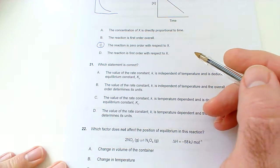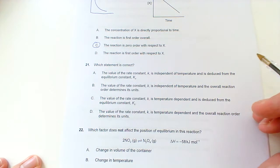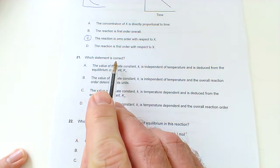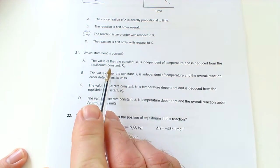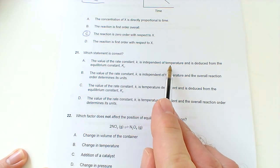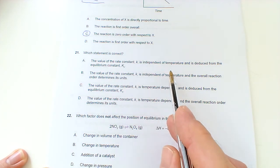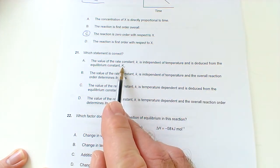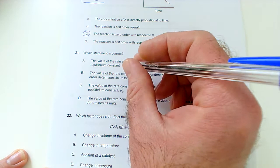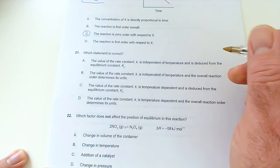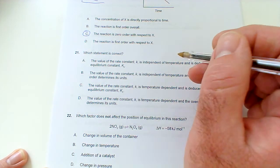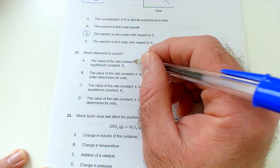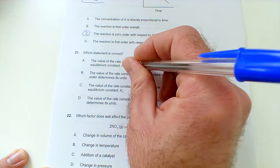Question 21, May 2018 Time Zone 2, Higher Level Chemistry. Which statement is correct? The value of the rate constant is independent of temperature — no, it's not, it increases with temperature. And it is deduced from the equilibrium constant — no, it's not. There's no direct relationship between rate constant and equilibrium constant, perhaps only via delta G and Kc, but not the rate constant.